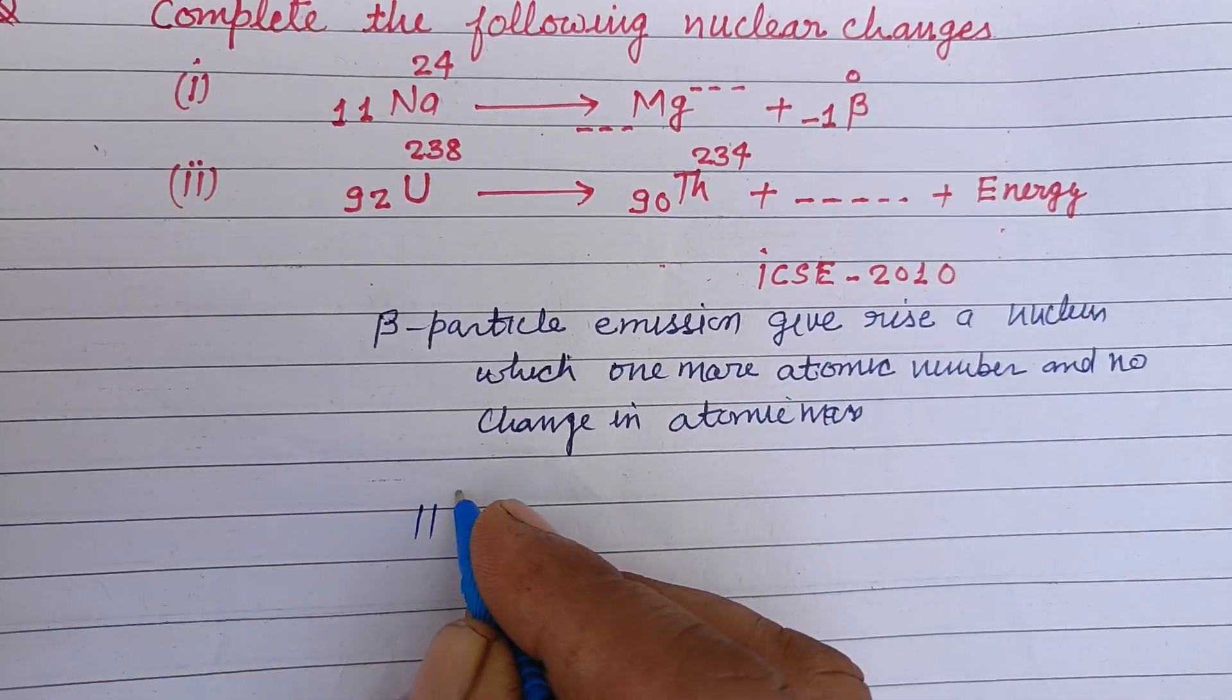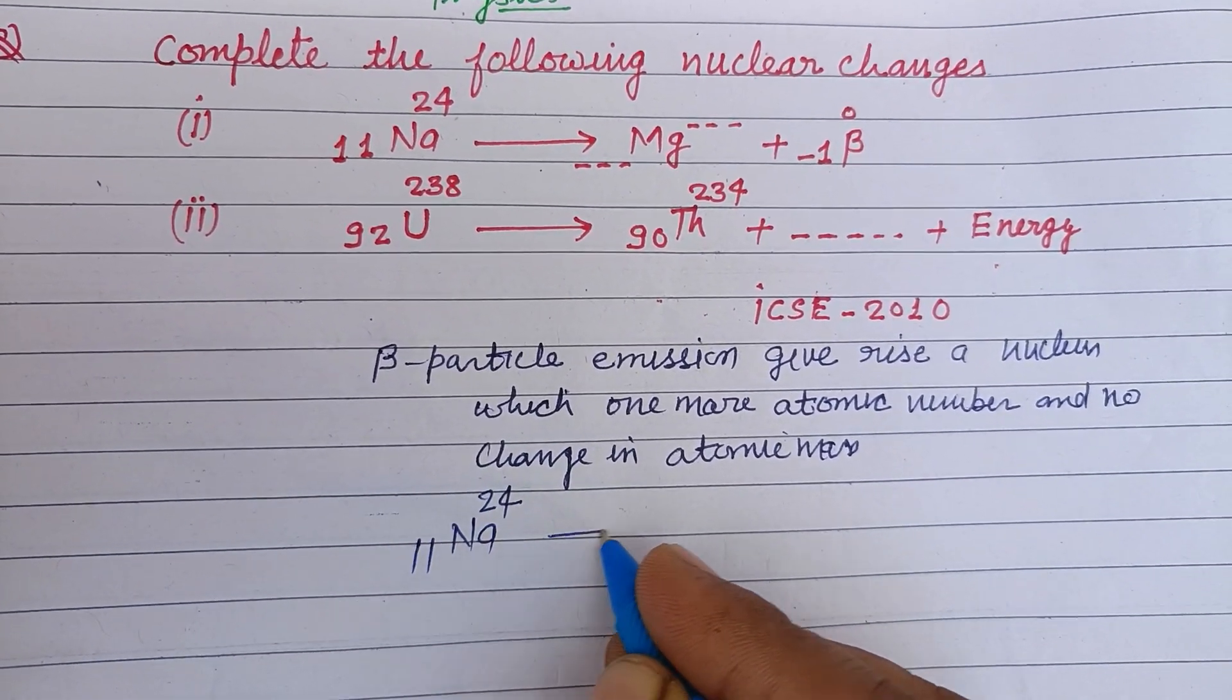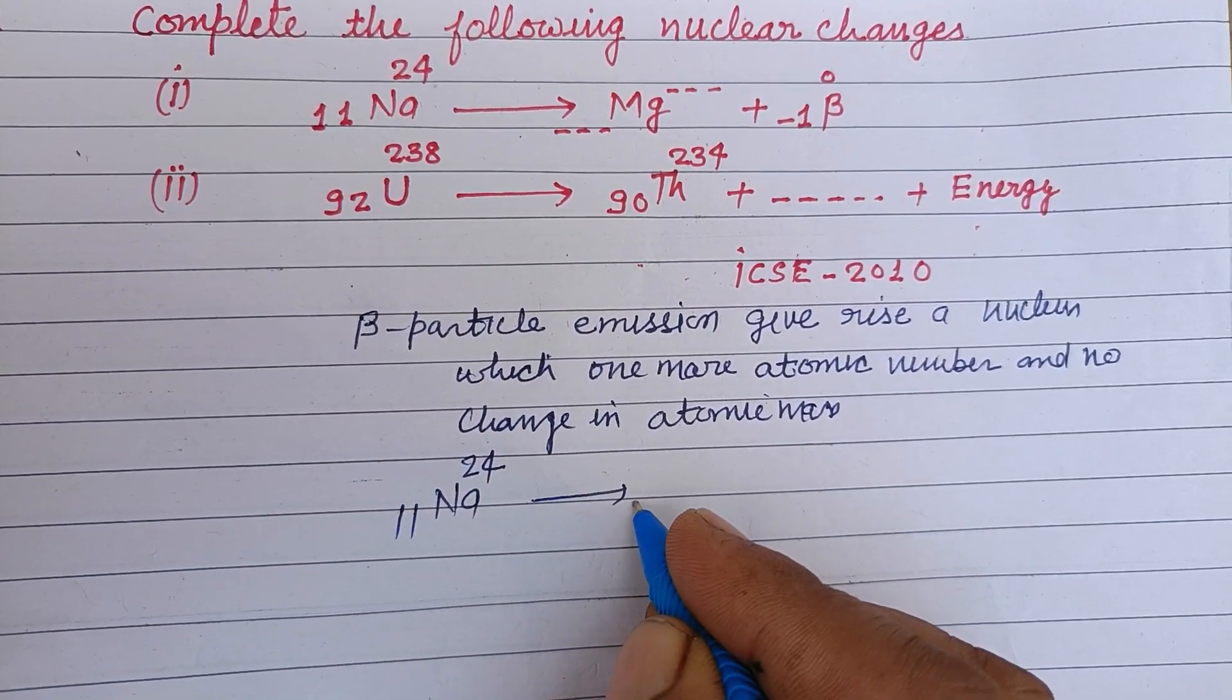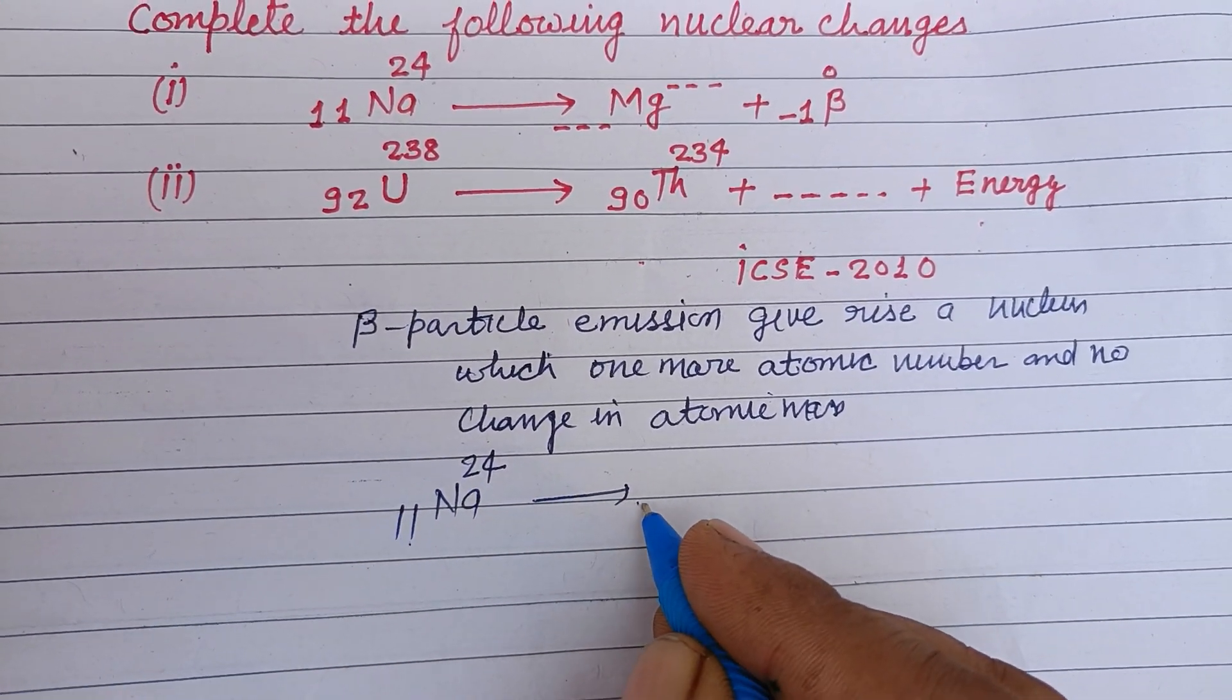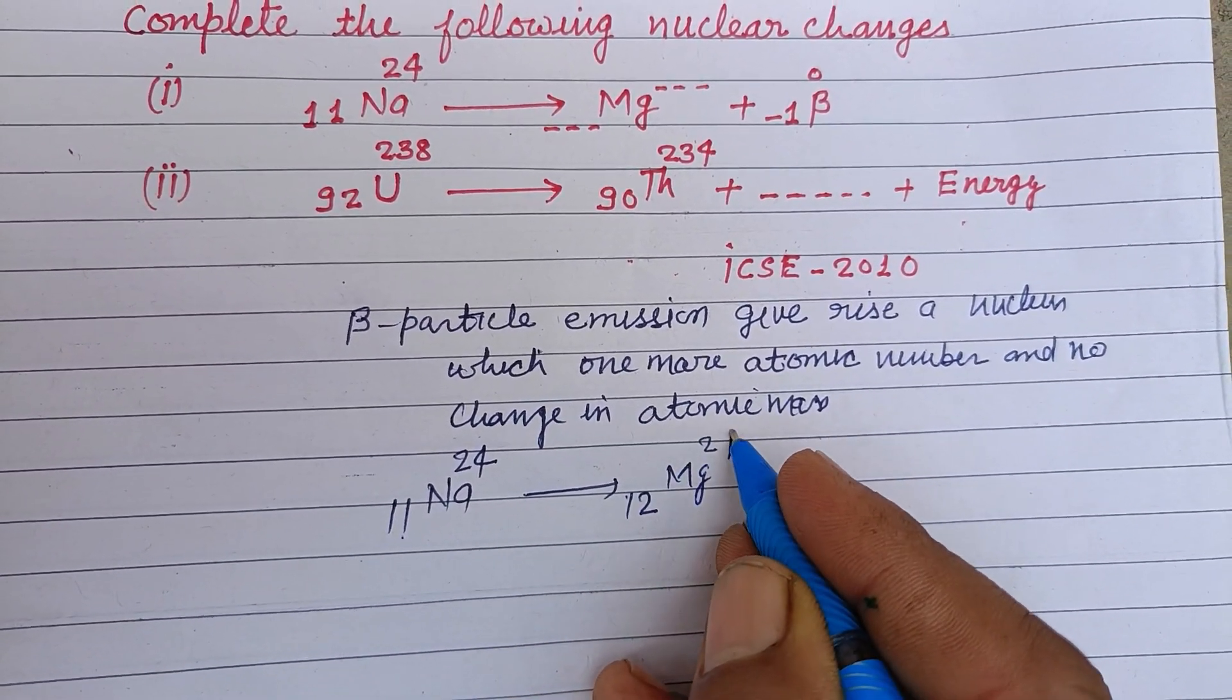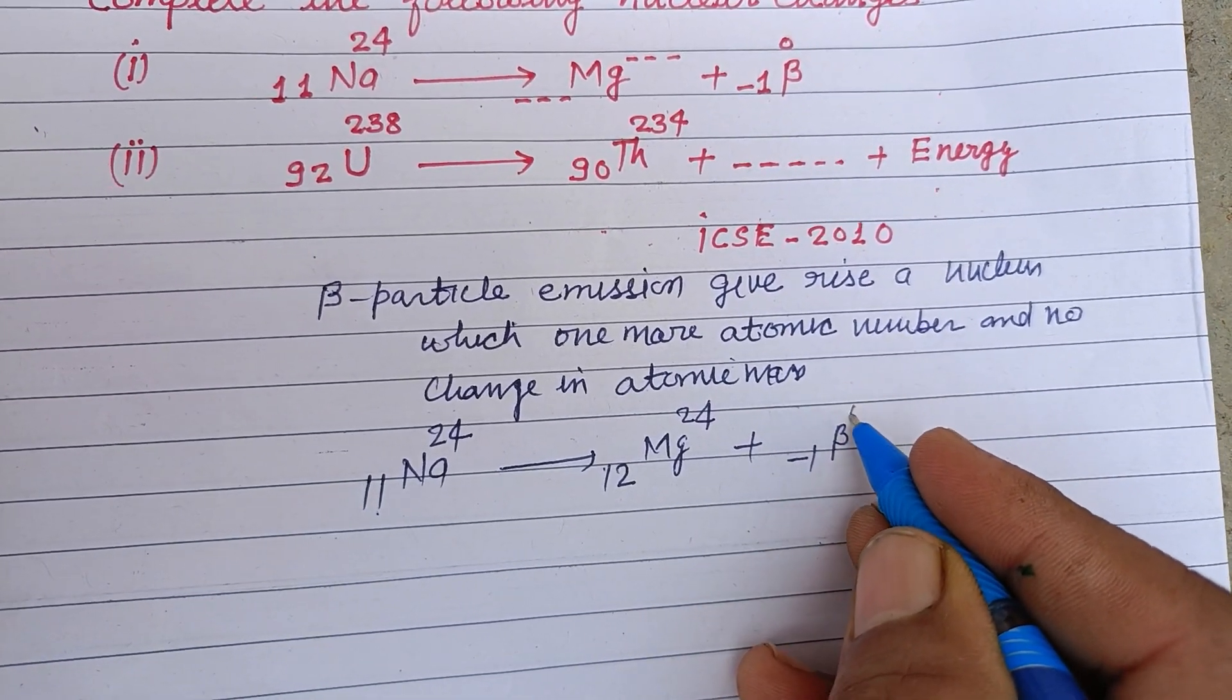Here the complete reaction is 11 Na 24 gives rise to, here 11 plus 1, this becomes 12 Mg 24 plus minus 1 beta 0.